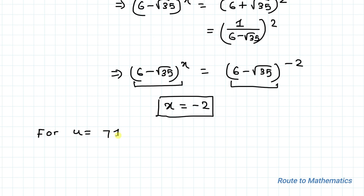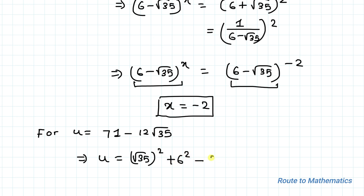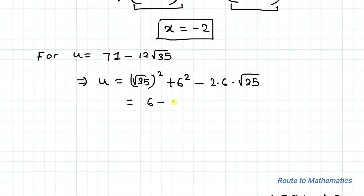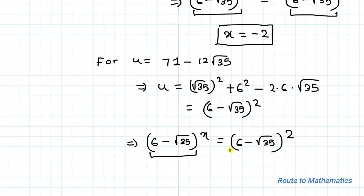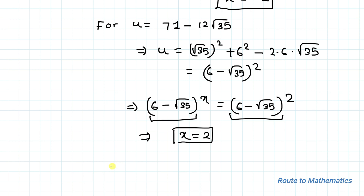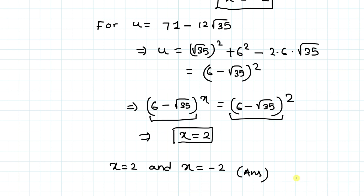For u equals 71 minus 12√35, similarly we can write this as (√35)² plus 6² minus 2 times 6 times √35, which equals (6 minus √35)². So (6 minus √35) to the power x equals (6 minus √35) to the power 2. Bases are the same, so equating powers gives x equals 2. Thus we have x equals 2 and x equals minus 2 as our answers. I hope you have understood the solution. Thanks for watching — please subscribe to my channel and click the bell icon for more such interesting videos.